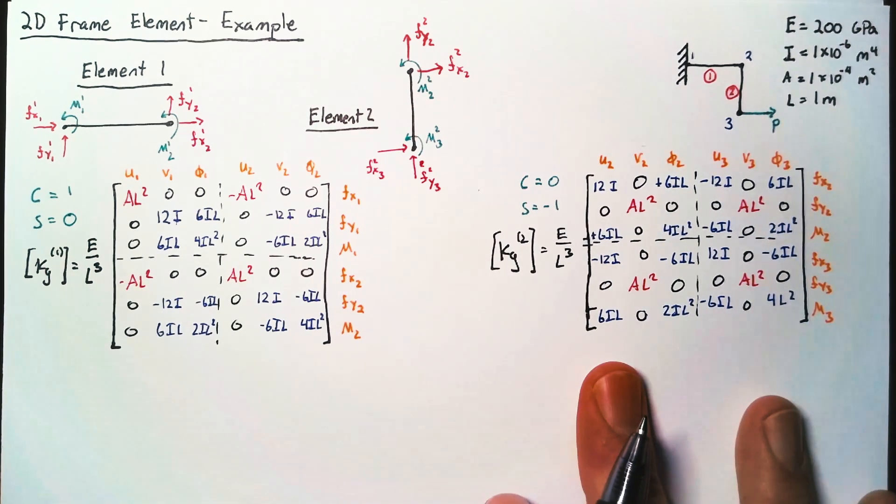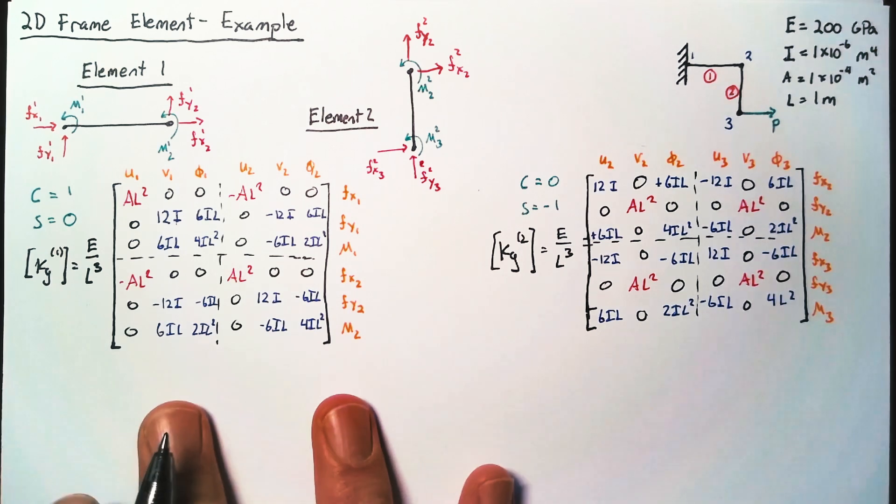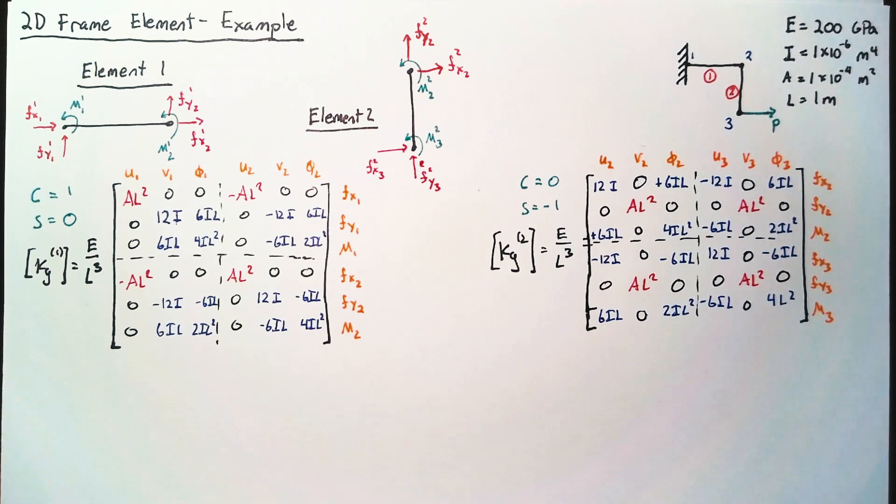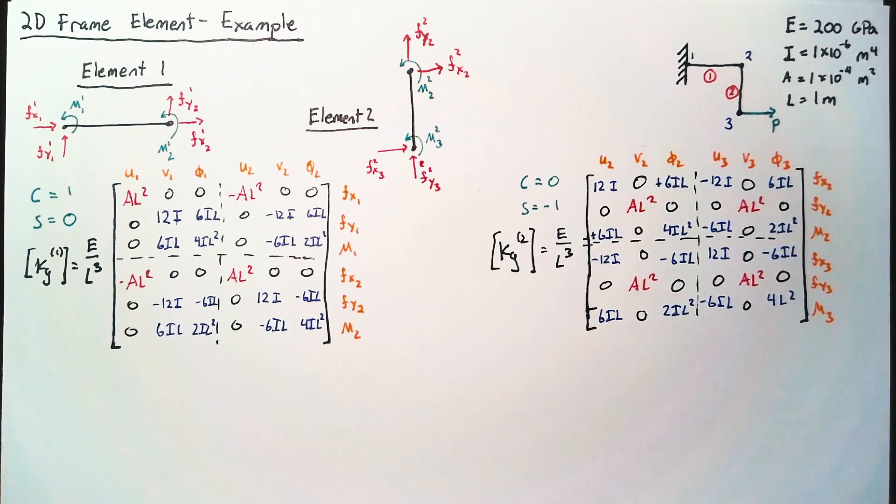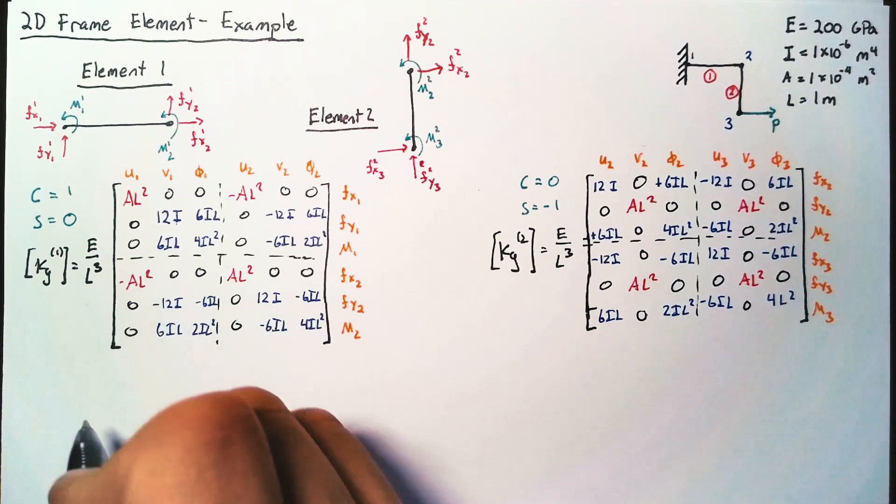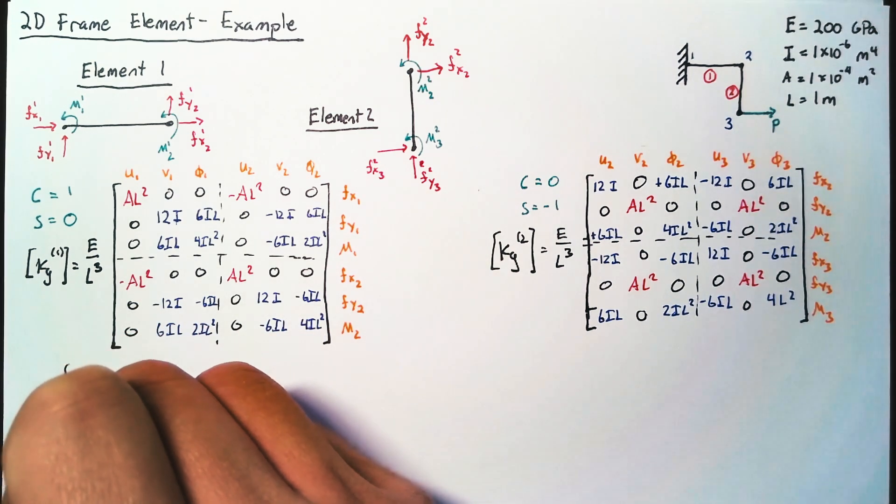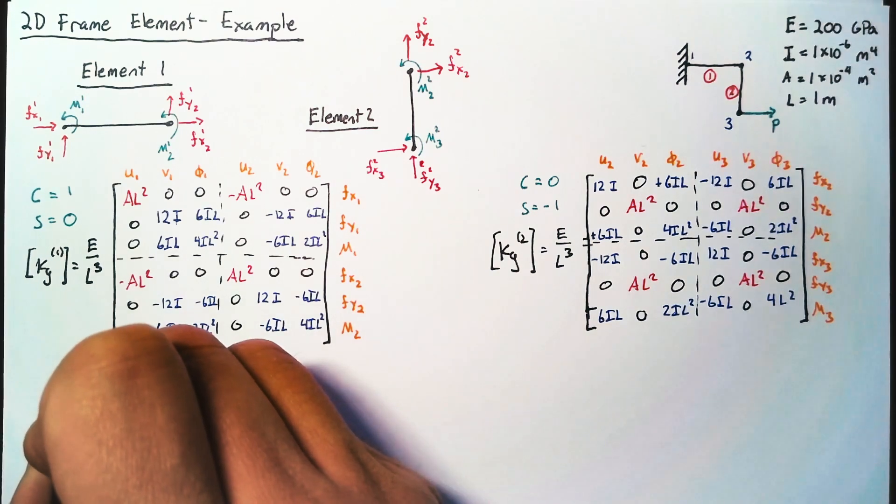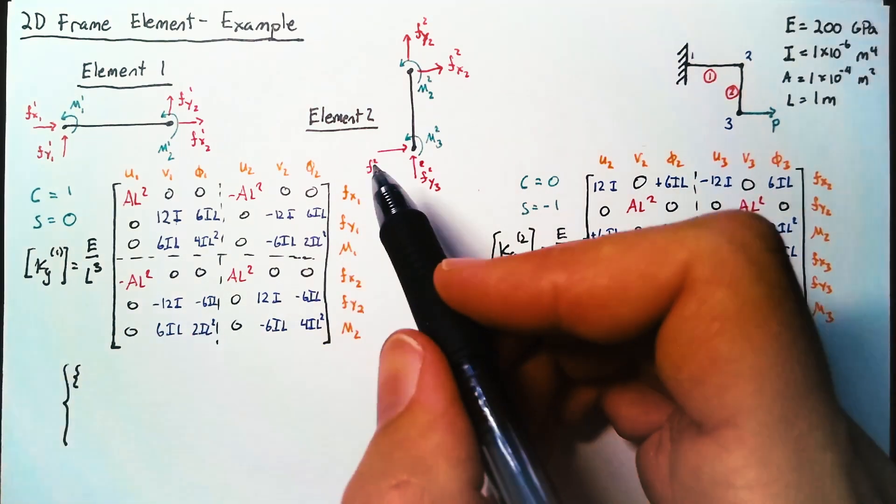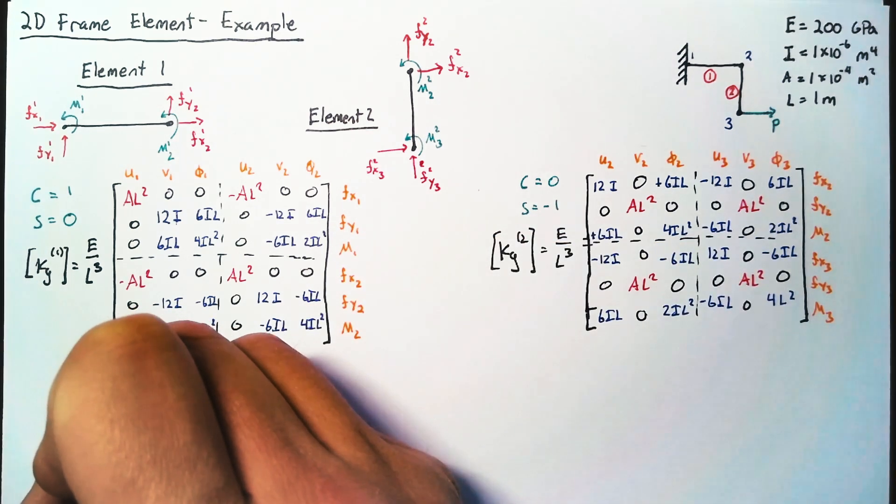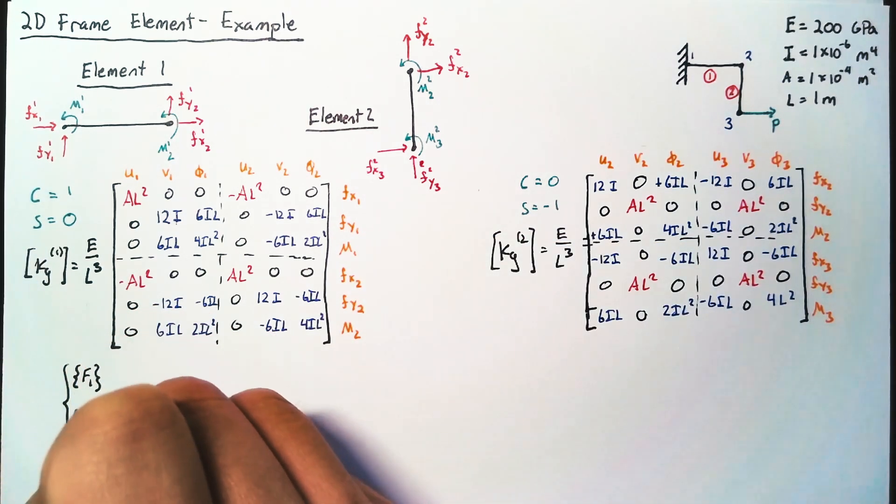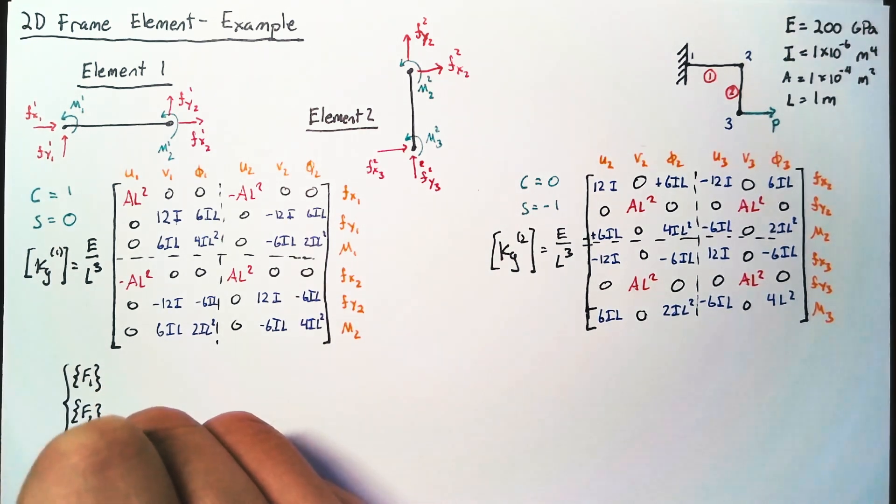So with all of it defined, we can go ahead and build out our 9x9 matrix. For sanity's sake and just for space, I'm not going to write all that out with each individual piece in play. Instead, I'm going to do some shorthands and say that this first three, so fx1, fy1, and m1, we're going to write just as a little sub-vector of forces. And we're going to do the same for node 2 and node 3.